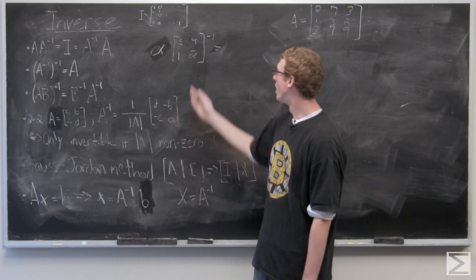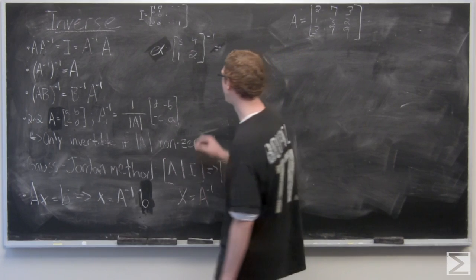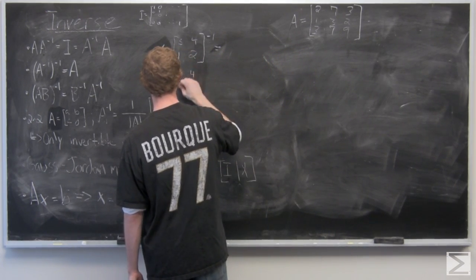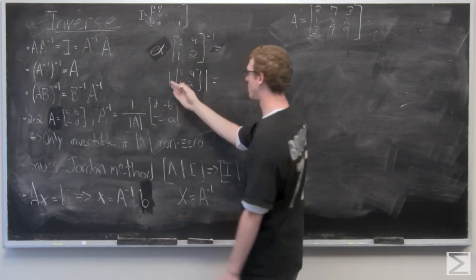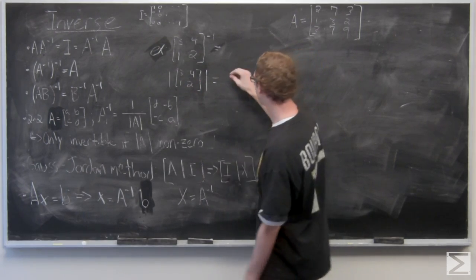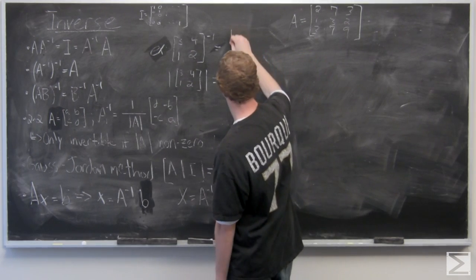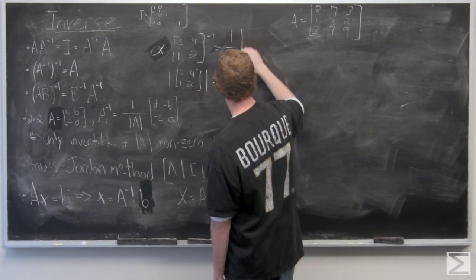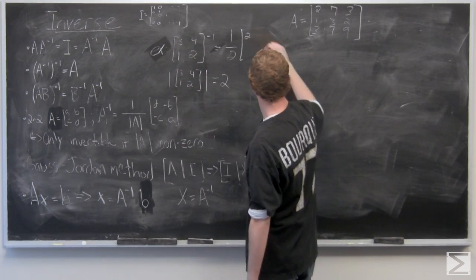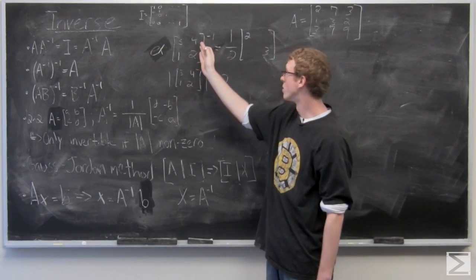So we're going to go ahead and just look at a quick example here. Let's first take the determinant of this matrix: 3, 4, 1, 2. Determinant symbols on the outside. 3 times 2 minus 4 times 1 is 2. So the inverse of that matrix is going to be one half. So we need to switch D and A, so that's 2 and 3. And we also need to multiply 4 and 1 by negative 1.